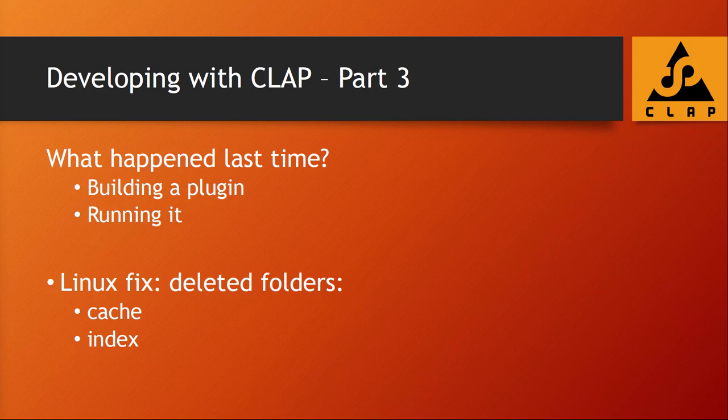Hello, it seems we're already in part three of this 'Developing with CLAP' series. Last time I showed you how to build a plugin on Linux, Windows, and macOS and how to run it with Bitwig. I had a strange issue on Linux with Bitwig running the CLAP file, but the solution was simple — the error message was completely misleading. The error was due to an early beta version of Bitwig creating a broken index, so the solution was simply to delete the cache and index folder in the Bitwig directory.